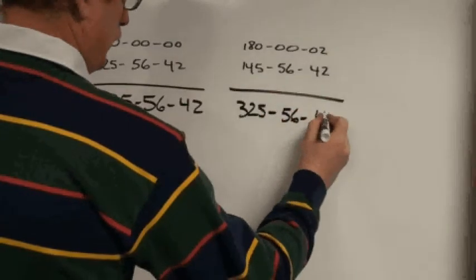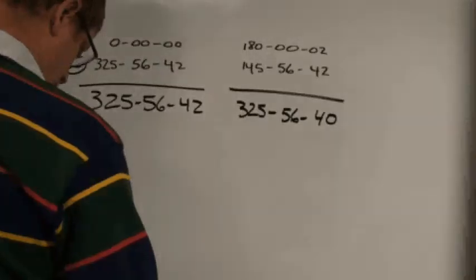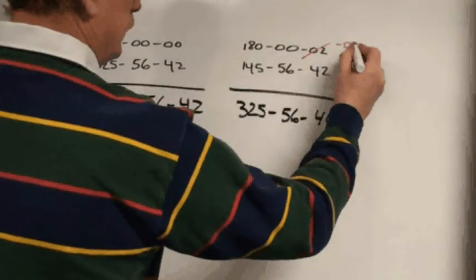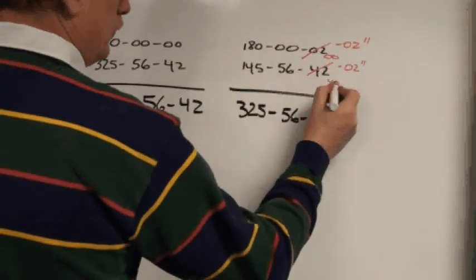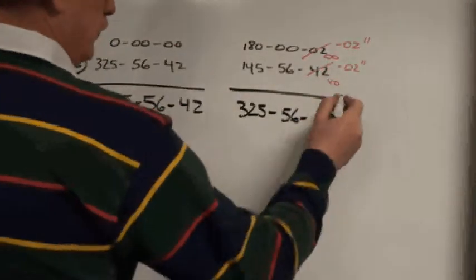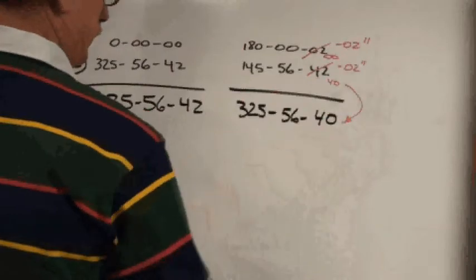Notice the 2 seconds is subtracted from the 42 to get 40 seconds. Subtracting 2 seconds from the top and bottom gives you 0-0-40, and that's how we get the mean of 40 seconds.